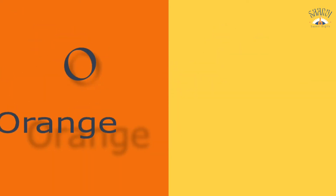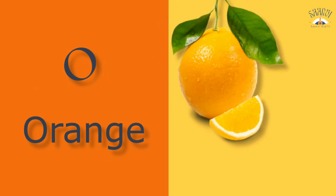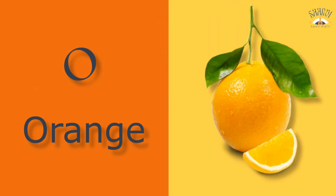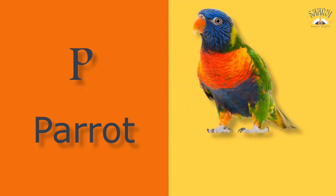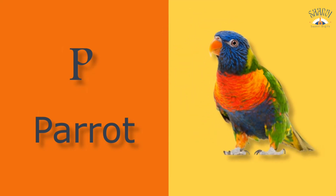O for orange. Orange means santara. P for parrot. Parrot means dota.